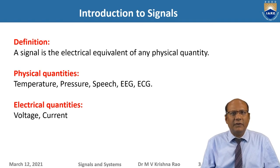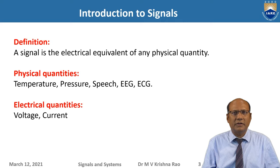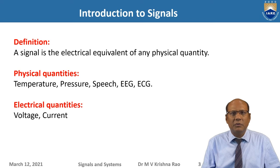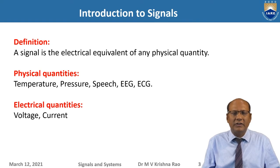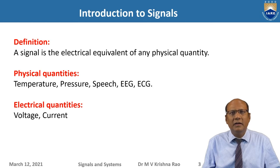Let us define the signal. A signal is the electrical equivalent of any physical quantity. If you take a physical quantity, for example temperature, and you want to measure the temperature at some point in this room, you put a thermometer and note down the readings. If you want to do it automatically, you put an electronic device called a thermocouple and convert the temperature — the physical quantity — into electrical voltage or current, and then display it on an oscilloscope or digitize it and display as a digit.